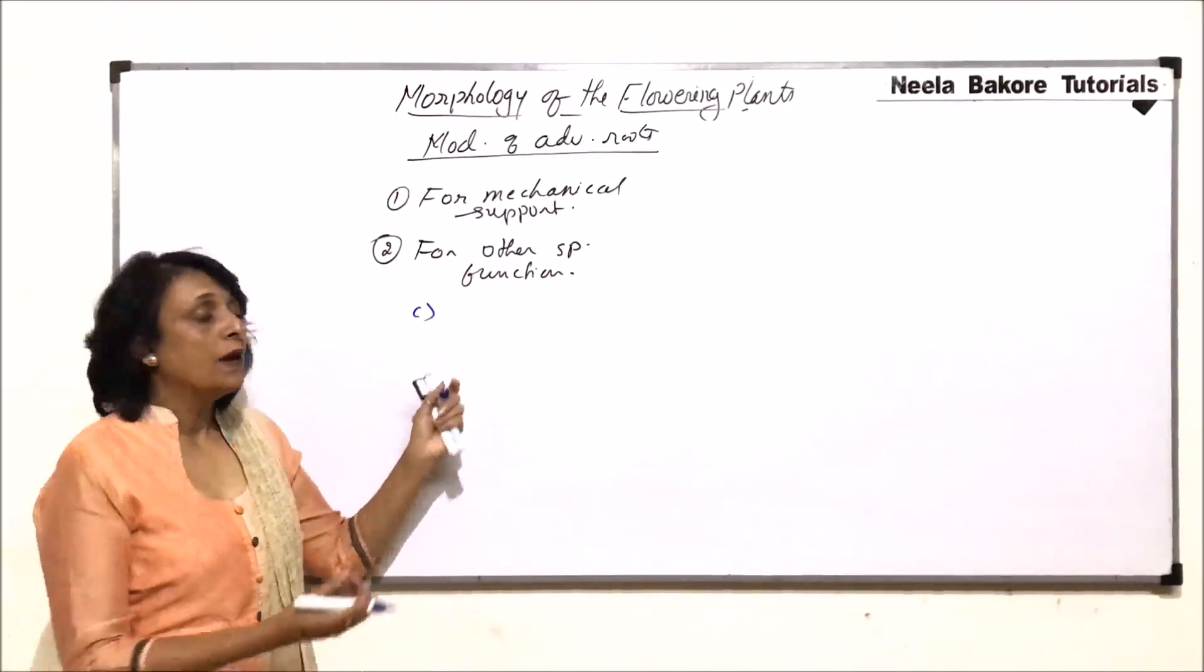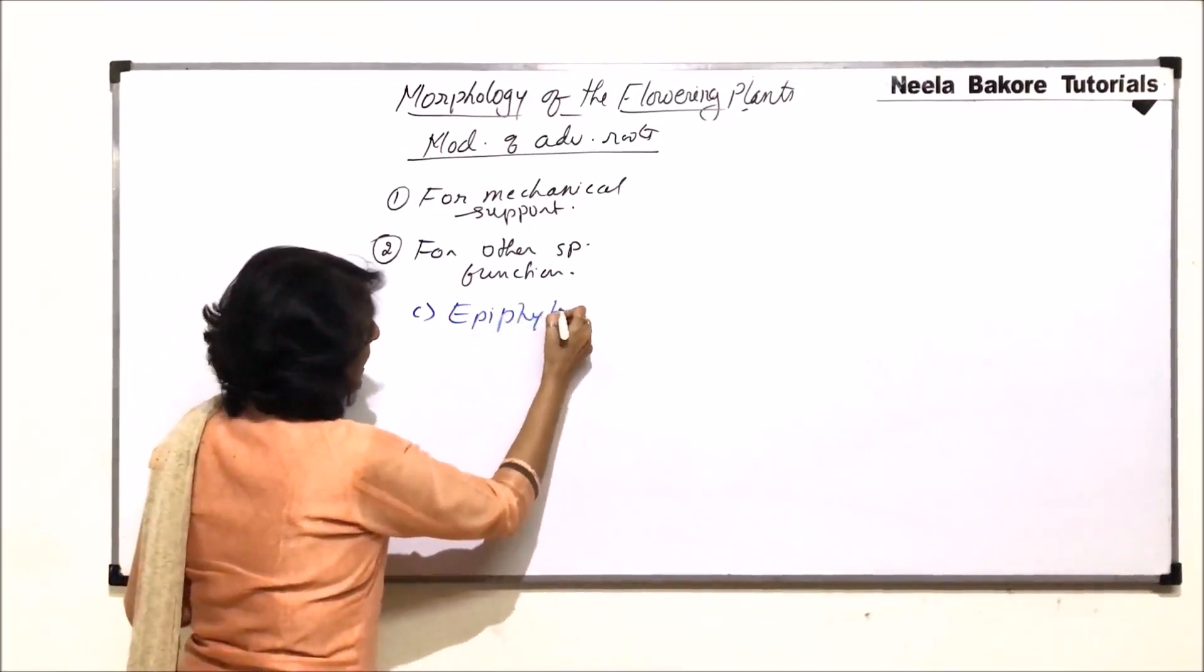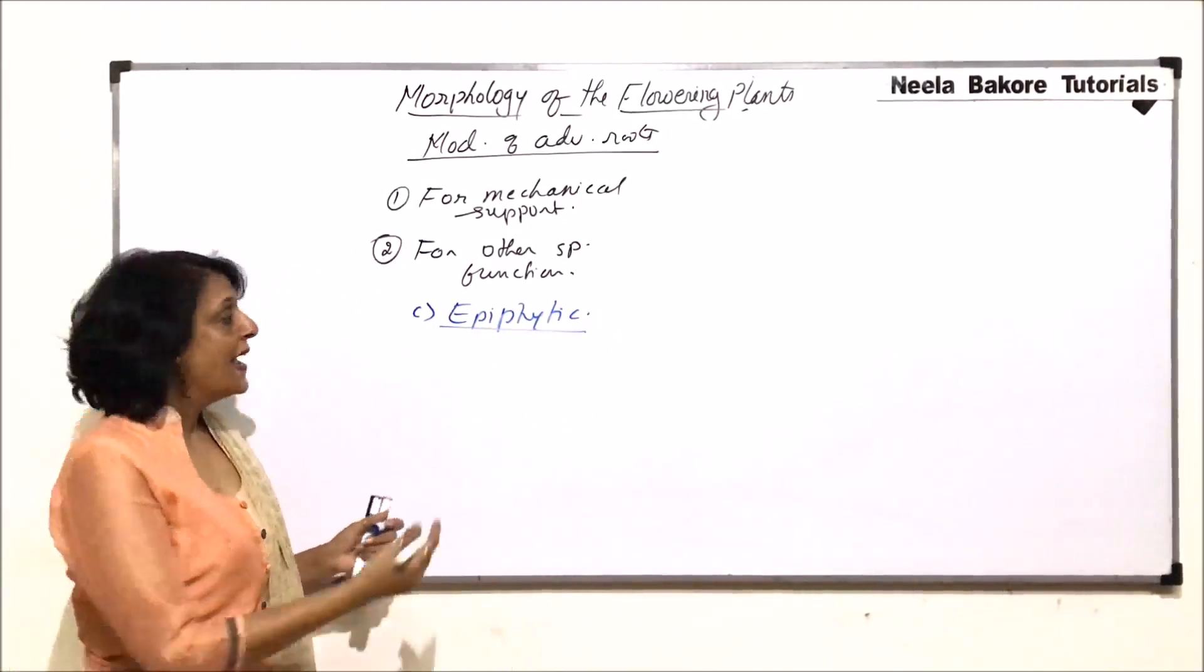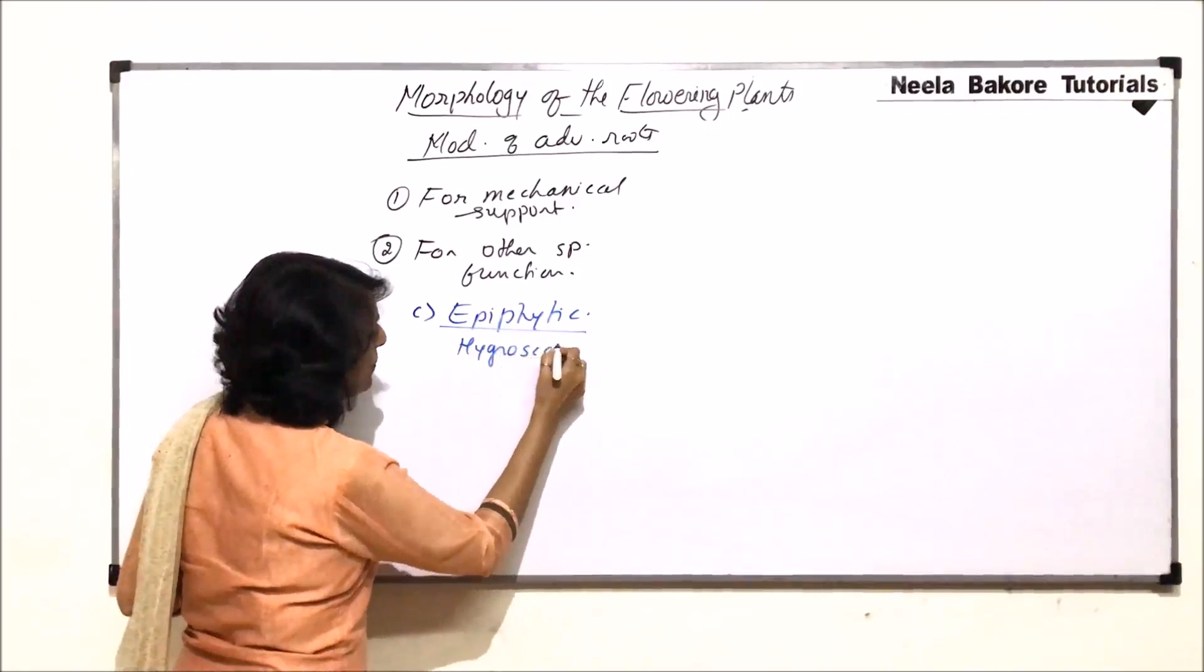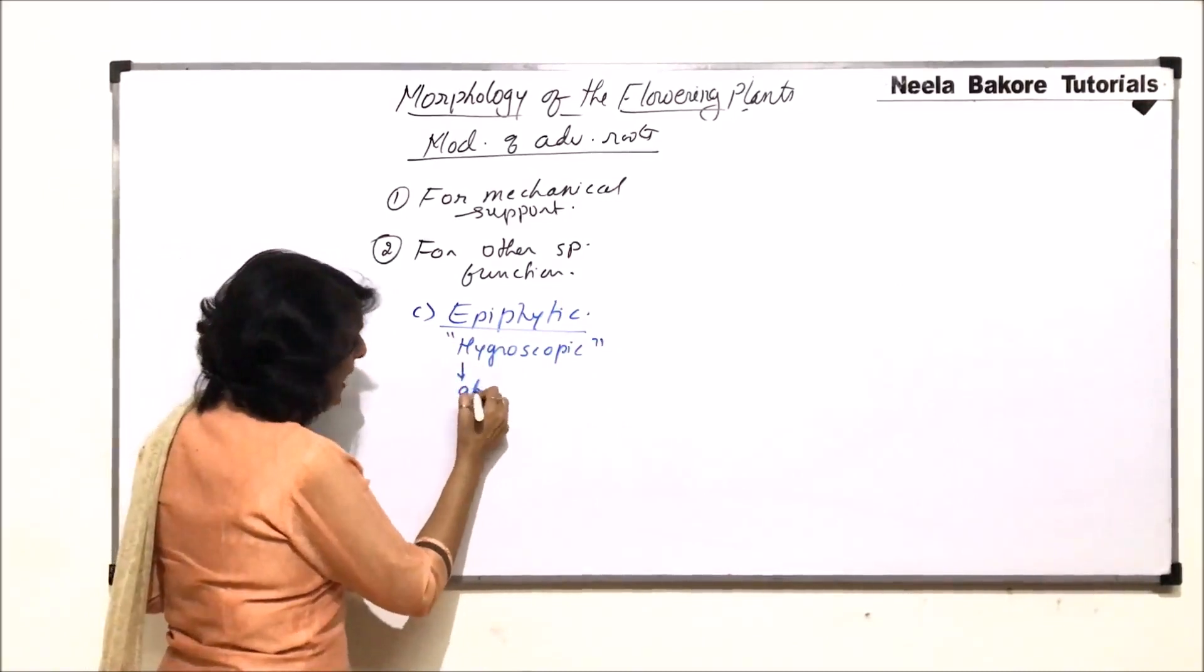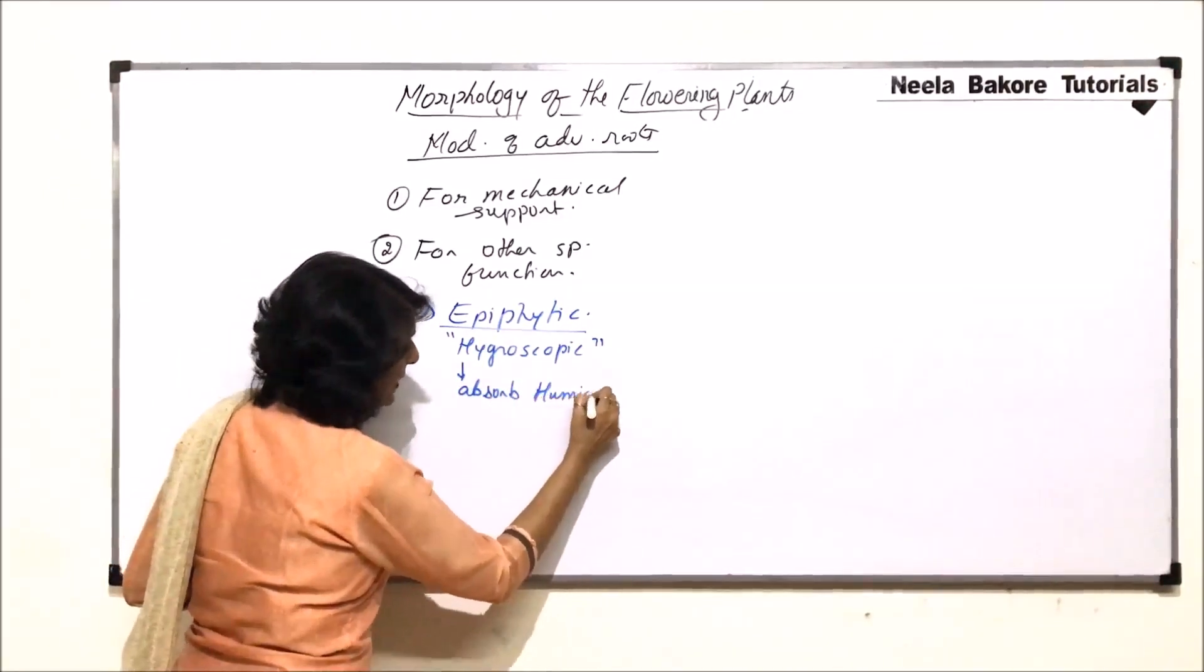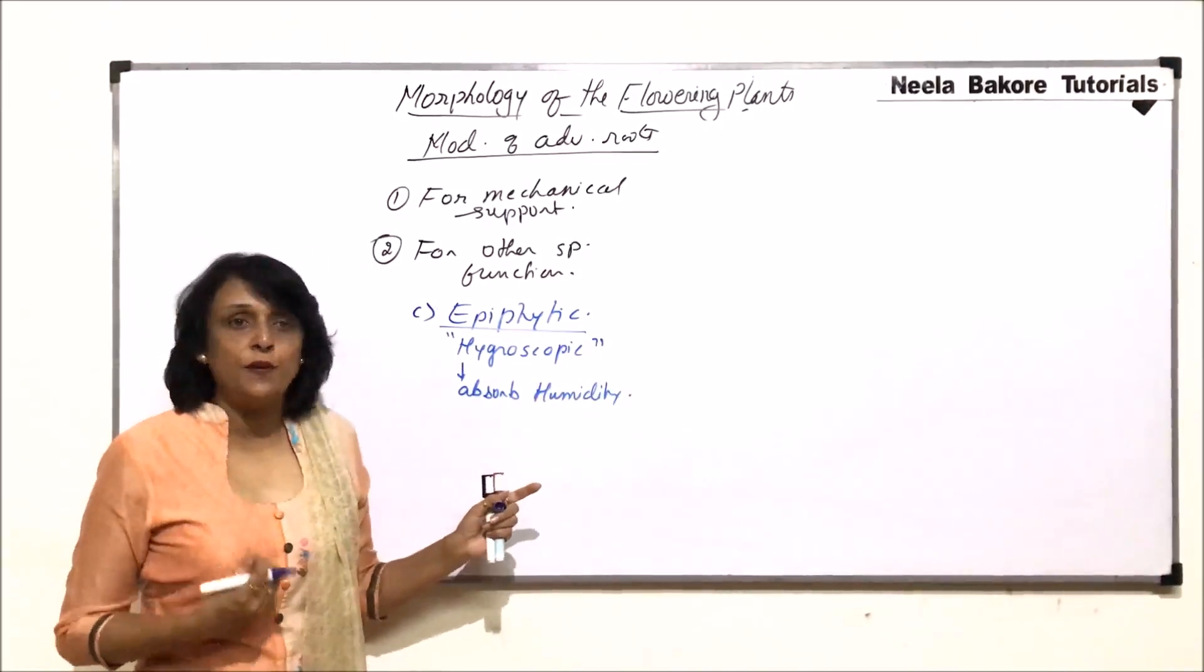Here we are talking of epiphytic roots. Epiphytic roots are found in epiphytes and they are also known as hygroscopic roots. Hygroscopic because they are able to absorb humidity. That means they absorb moisture from the atmosphere.